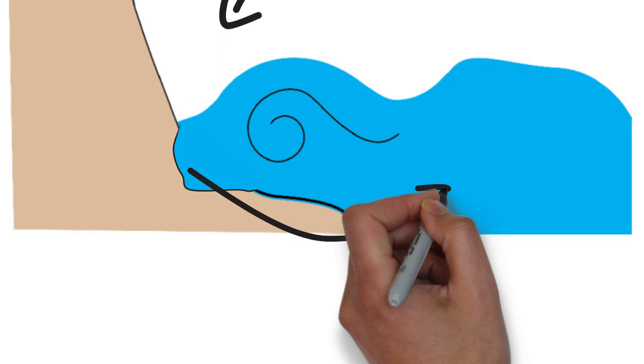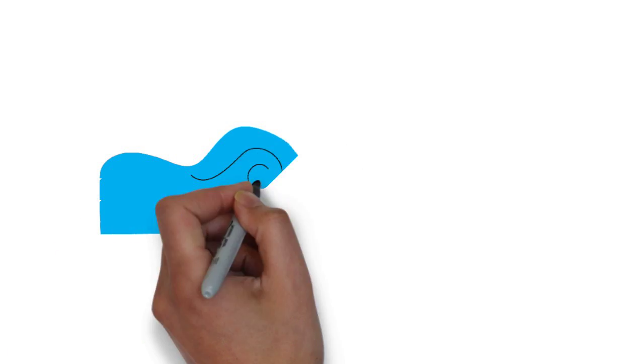Currents then carry that sand from the bluffs down shore, where eventually it gets deposited on a different beach or forms a new one. So if sand bluffs didn't erode, we wouldn't have beaches at all.